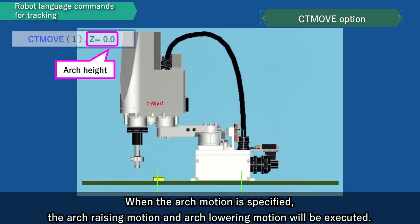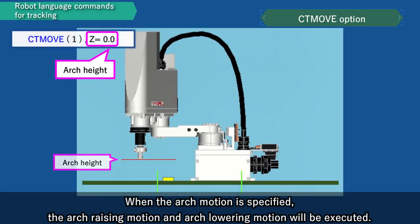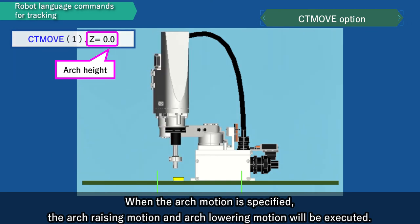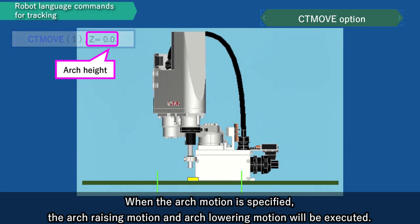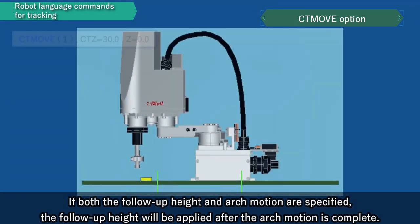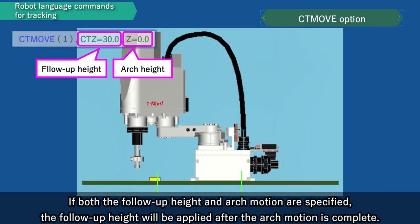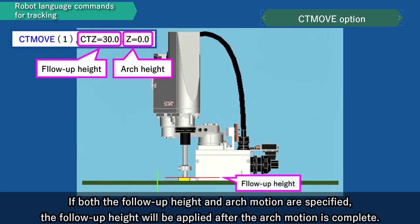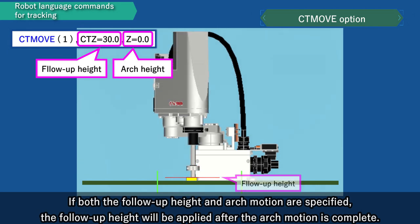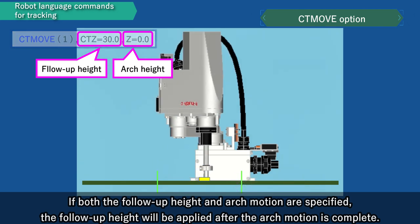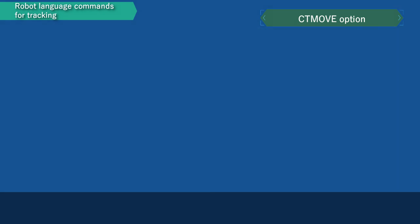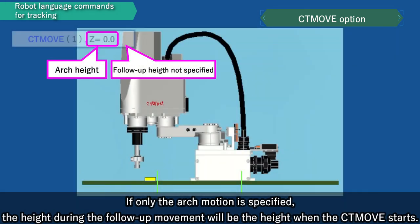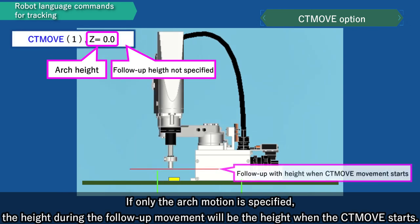When the arch motion is specified, the arch raising motion and arch lowering motion will be executed. If both the follow-up height and arch motion are specified, the follow-up height will be applied after the arch motion is complete. If only the arch motion is specified, the height during the follow-up movement will be the height when CT-move starts.